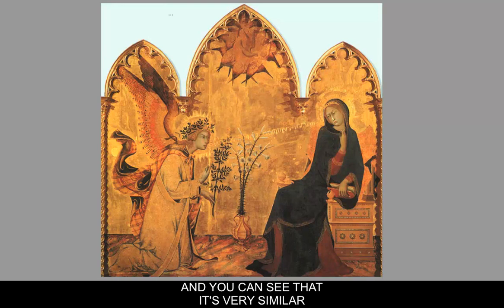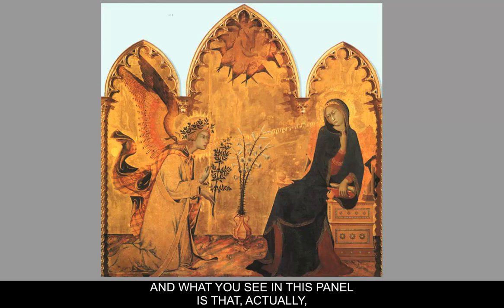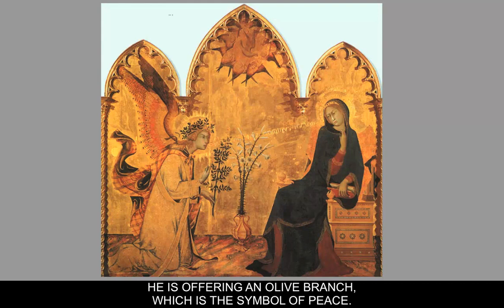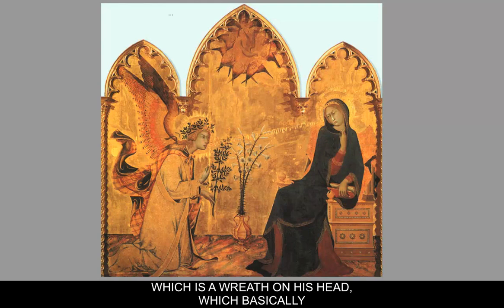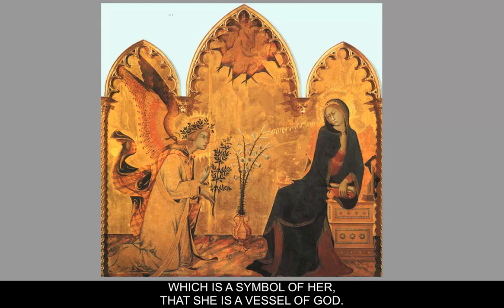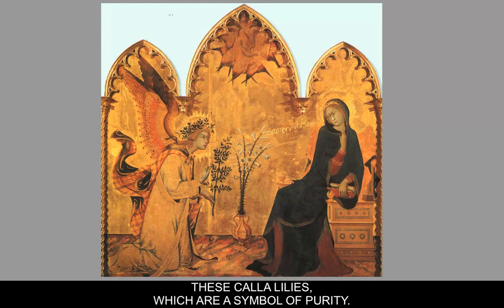Zooming in on this panel, you can see it's very similar to Nicola Pisano's iconography of Gabriel coming and announcing to Mary that she's going to have God's child, Jesus. Gabriel is lower than Mary; we have him on the left-hand side. He is offering an olive branch, a symbol of peace, and he also has a wreath of olives on his head, also a symbol of peace. Between Mary and Gabriel is a vessel, a symbol that she is the vessel of God, with white flowers representing purity — these calla lilies symbolize her womb as the vessel of God.